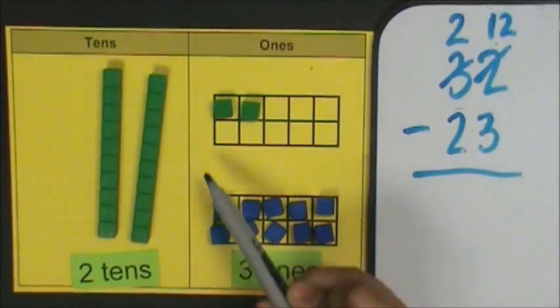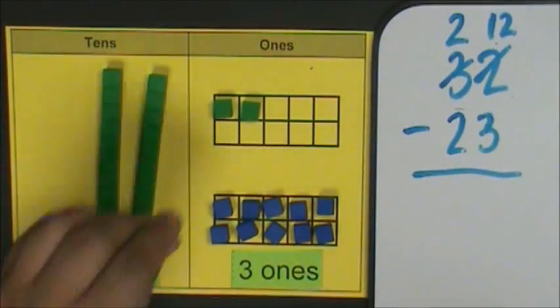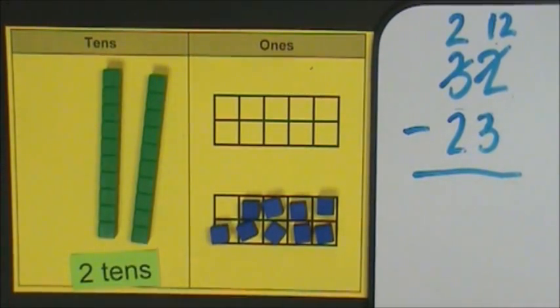Twelve ones minus three ones. Two, three. I have five and four. I have nine ones. Twelve minus three is nine.